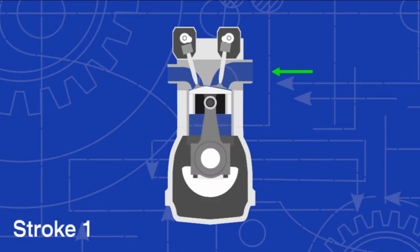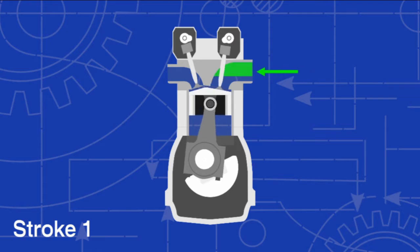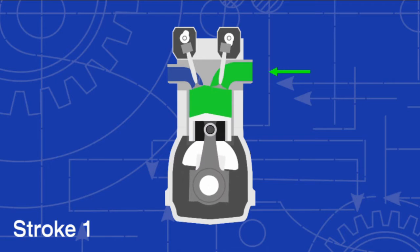In the intake stroke, the piston is pulled downwards, drawing in a fuel-air mixture into the chamber through the intake valve. The valve is then shut, trapping the gas in the chamber.